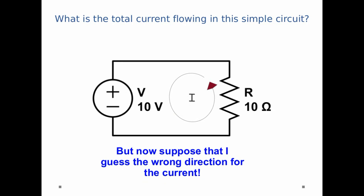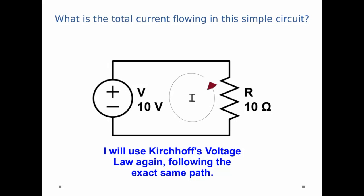But now suppose that I guess the wrong direction for the current. Now remember, when we analyze Kirchhoff's laws, it shouldn't make a difference. I should get the same answer at the end of the day, it should just have an opposite sign signifying that I guessed the wrong direction. So once again, I'm going to use Kirchhoff's voltage law, and I'm going to follow exactly the same path.